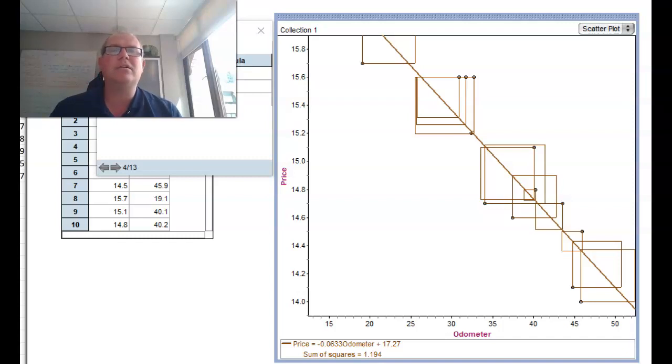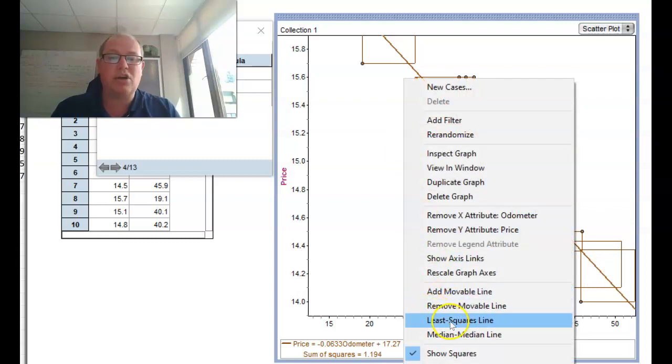You won't learn this till you do calculus and vectors in the future, but the reason we squared the numbers is the squaring function's a really nice function you can differentiate. When you get to calculus you'll learn how to minimize the sum of squares by setting the derivative equal to zero. All of that theory's going on in the background which you're going to learn in grade 12. All we need to do in grade 8 is right click and get the computer to do it all for us. It's called the least squares line.